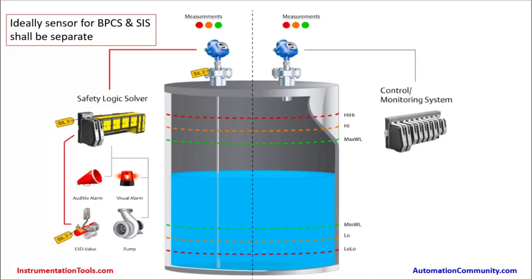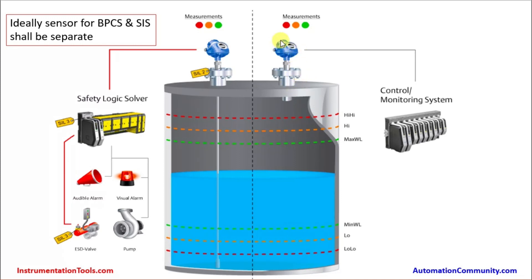Here is another example of a level measurement in a tank. We have two different transmitters — one is connected to the safety logic solver, which is the safety instrumented system, and the other transmitter is used for the control and monitoring system, which is the basic process control system, BPCS. It is best practice to have two independent measurement instruments with no dependency. Ideally, sensors for BPCS and SIS shall be separate, so that any failure, trouble, or programming error on one instrument will not impact the safety instrumented system function.